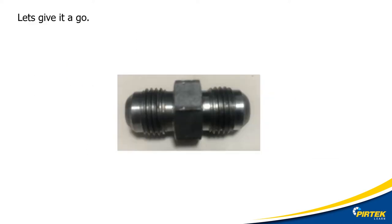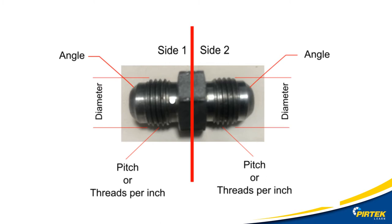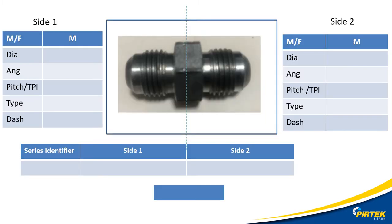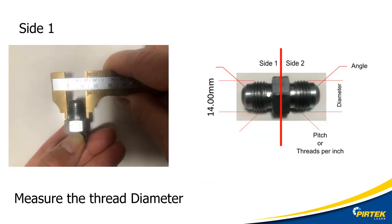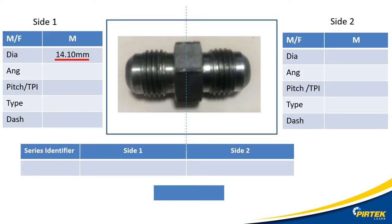I found a hydraulic fitting. Let's identify it. There are two ends, so I'll need to gather information from both ends to identify the thread. I'll use a template to organize my measurements. Using the calipers from the PERTEC thread identification kit, I measure the outside diameter. I enter 14.10 mm as the diameter for side one.